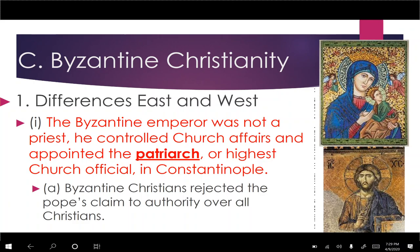Byzantine Christians rejected the Pope's claim to authority over all Christians. They recognized the Pope as a bishop and even as a major leader of Christianity, but when the Pope crowned Charlemagne as Emperor of the Holy Roman Empire, the Byzantine Empire rejected that outright — they saw Justinian as the emperor and felt the Patriarch should have been consulted in such a major decision. They were very offended by the Pope's actions.